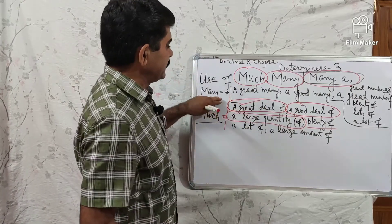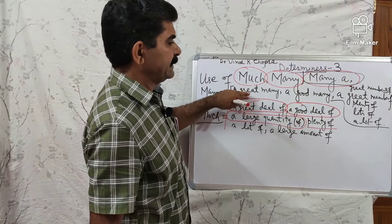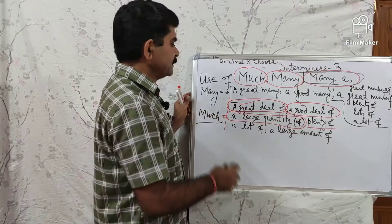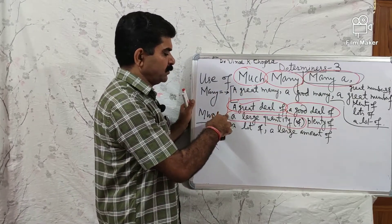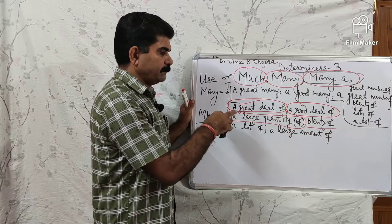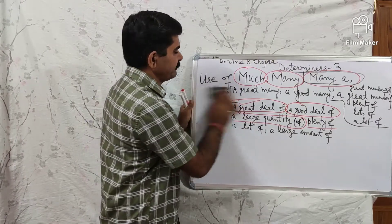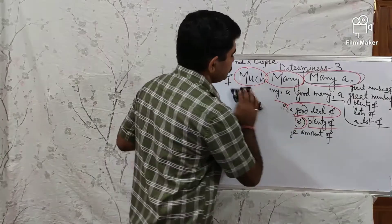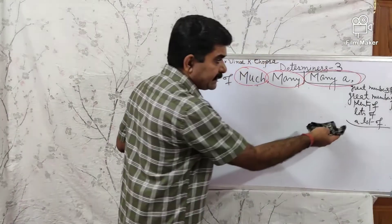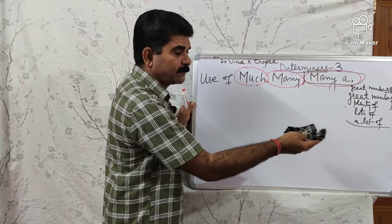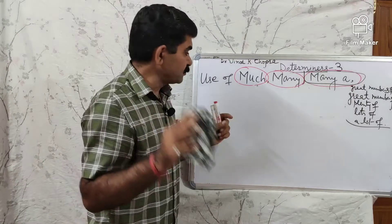Many is equal to: a great many, a good many, a great number of, great numbers of, plenty of, lots of, a lot of. Much is equal to: a great deal of, a good deal of, a large quantity of, plenty of, a lot of, a large amount of. Keep it in mind: much is used in negative and interrogative, but these alternatives — a great number of, great deal of, etc. — are used in affirmative. And these are also determiners.